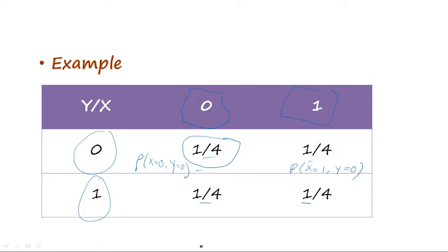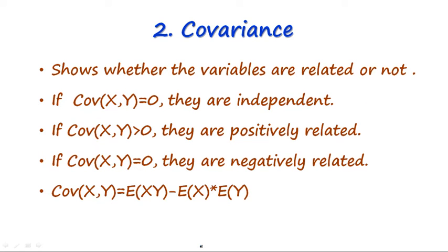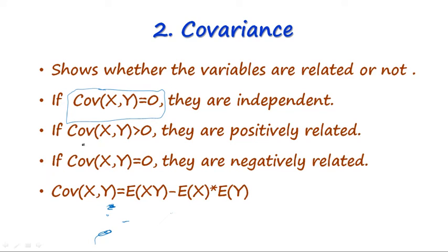Our next concept is covariance. In the case of two random variables, covariance is a concept just like covariance in frequency distribution — it shows whether the random variables are independent or related. If the covariance between the two random variables is 0, it means they are not related at all and are independent. If covariance is positive they are positively related, and if covariance is negative they are negatively related.